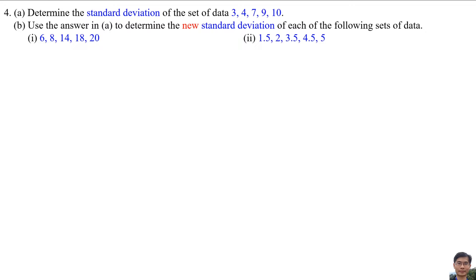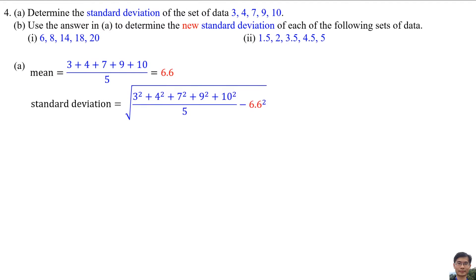Number 4A. Determine the standard deviation of the set of data: 3, 4, 7, 9, and 10. To find the standard deviation, we need to find the mean. The mean equals 6.6. Standard deviation equals the square root of variance. Variance equals the sum of all data values squared divided by the total number of data, minus the mean squared. So the standard deviation equals 2.728.